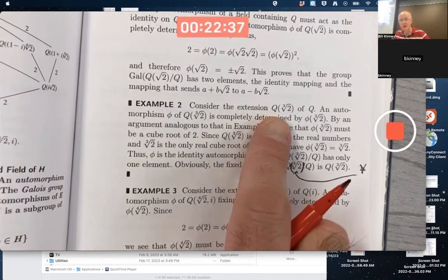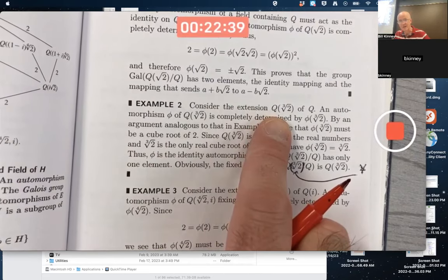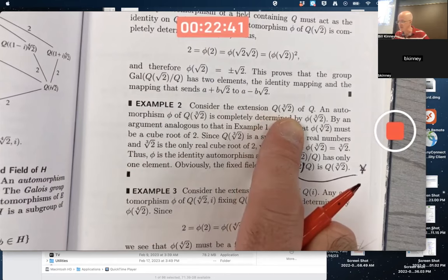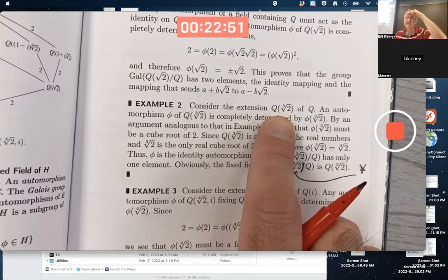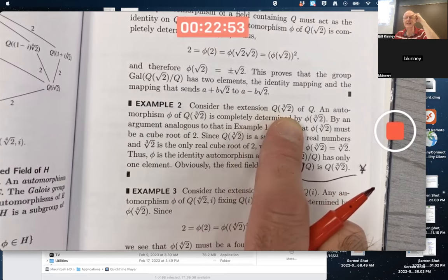Consider the extension Q adjoined cube root of 2 of Q. Always remind yourself, this is the smallest subfield of the reals containing all the rationals and also containing the cube root of 2.